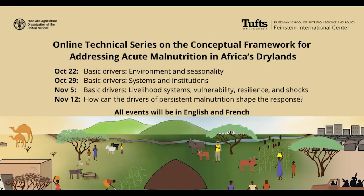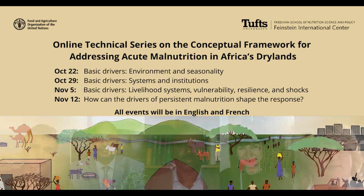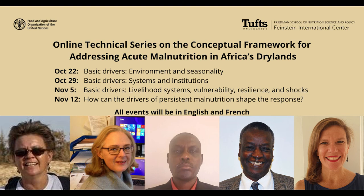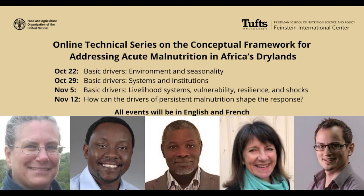Business as usual with a limited toolbox of expensive emergency interventions is not enough. We urgently need new analysis and new approaches to make headway on the problem of persistent acute malnutrition among children in Africa's dry lands. Tufts University and FAO are co-hosting this technical series to review the basic drivers of malnutrition and to discuss the adapted conceptual framework for addressing acute malnutrition in Africa's dry lands. Twenty expert panellists and moderators from civil society, government, UN agencies and academics will share new evidence and present expert and regional perspectives. Join us for this series of four online panel events.